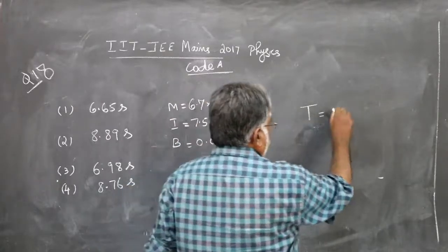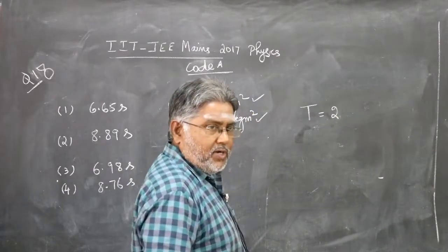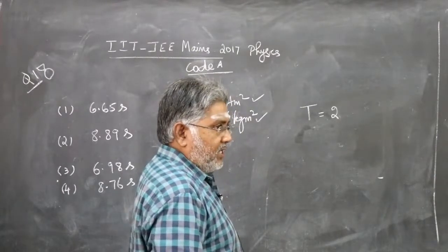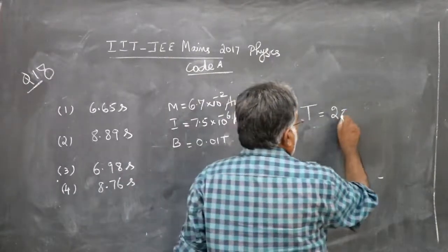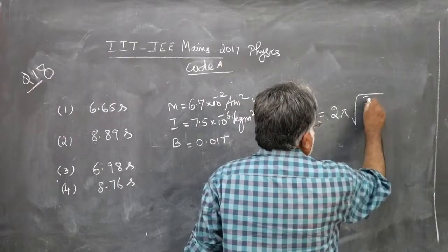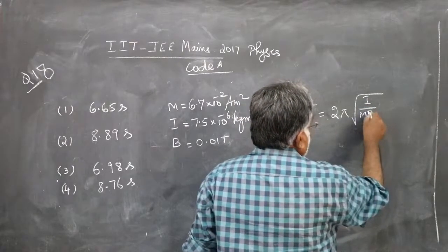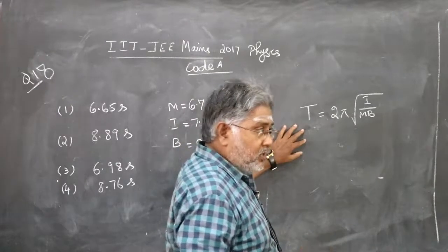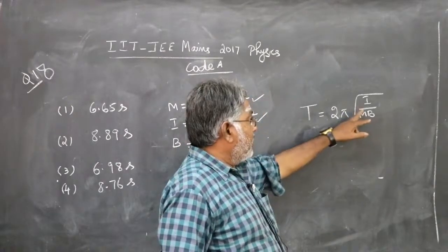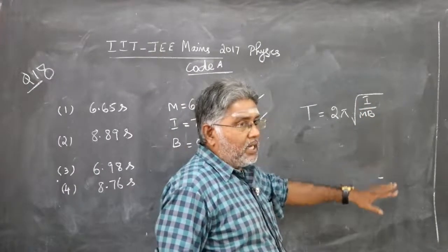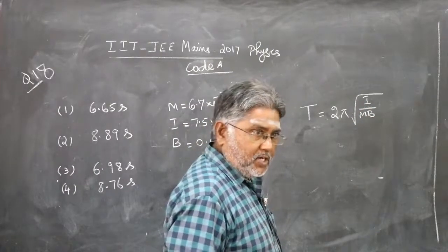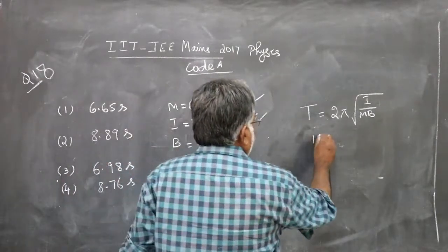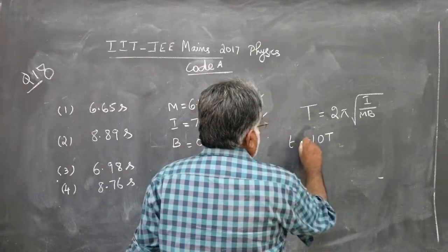We know the time period of oscillations. A magnetic needle is also a magnetic dipole in an external uniform magnetic field. The formula is T = 2π√(I/mB), where T is the time period of oscillation, I is moment of inertia, m is magnetic moment, and B is the external uniform magnetic field. Then 10 times T will give you the time taken.